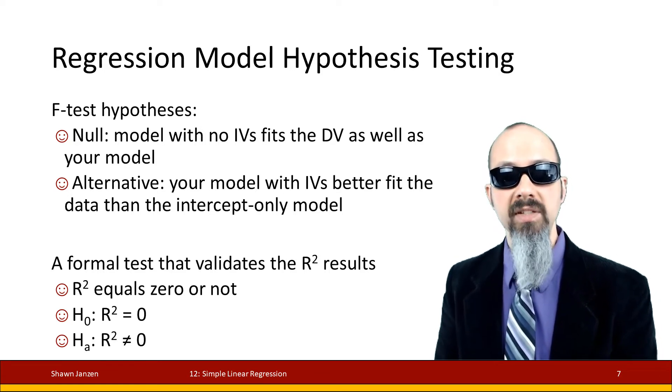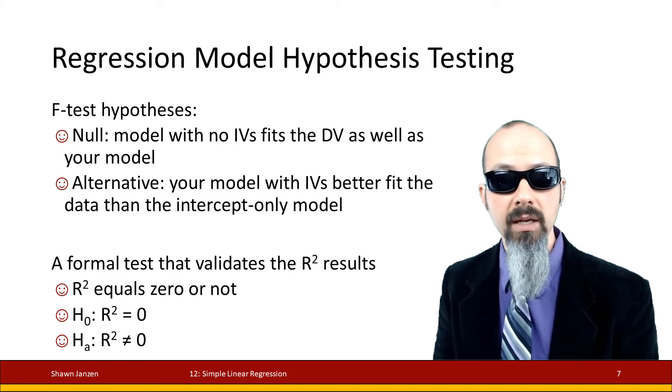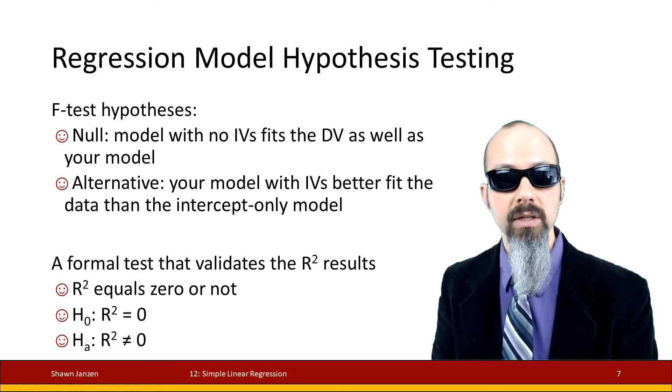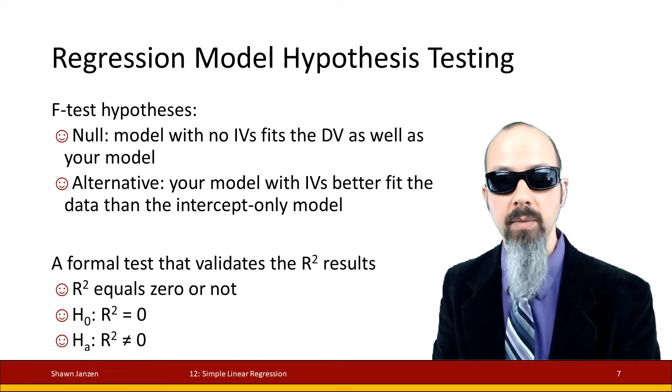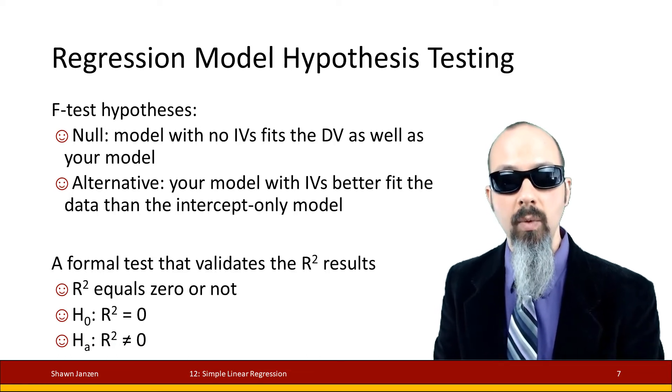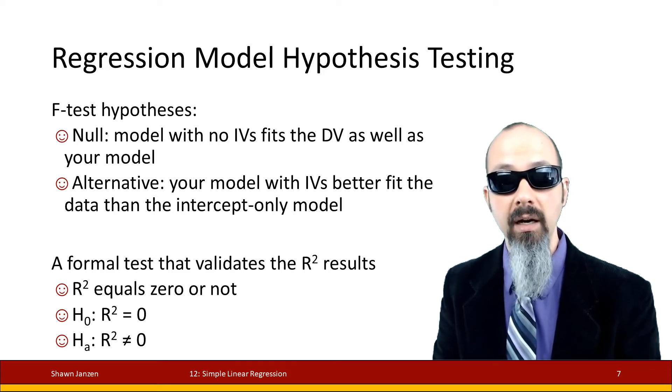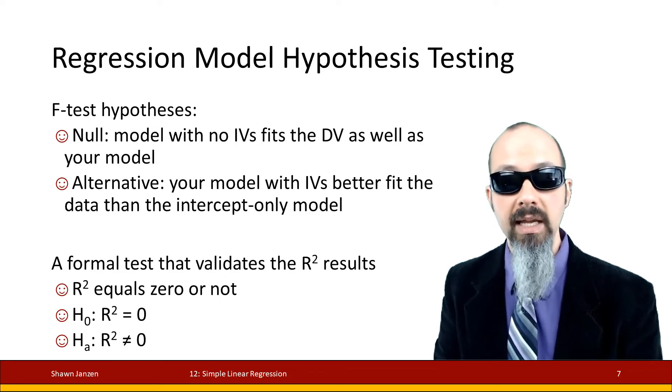If we had a group of data for heights of everybody in the class, and I asked you what is the best measure to represent the height for everybody, most of you would probably say the average or the mean—some may make a case for the median. Most cases we'll say mean, so long as it's normally distributed. Of course, if we're skewed, that's when we make a case for the median.